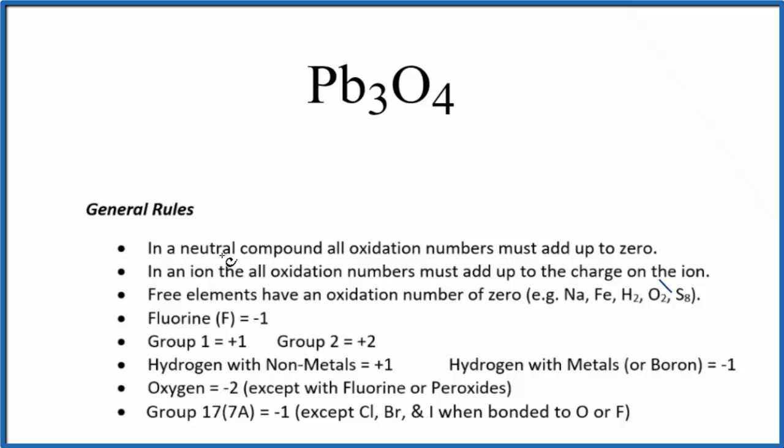First we know that in a neutral compound, one that doesn't have a plus or minus sign after it, all the oxidation numbers add up to zero. So all of the oxidation numbers here equal zero. We don't know what the lead is - that's a transition metal - let's call that X. Oxygen is always minus 2 with just a few exceptions.